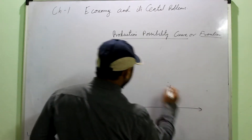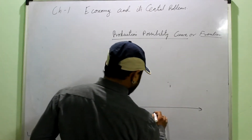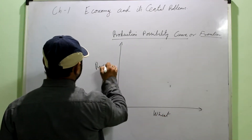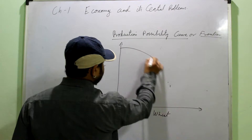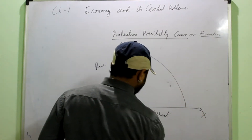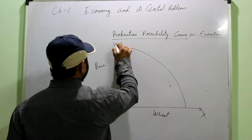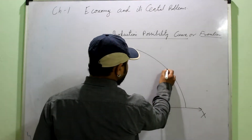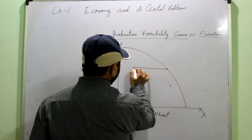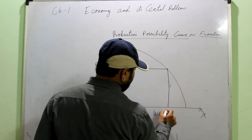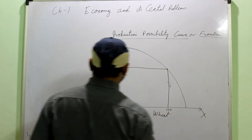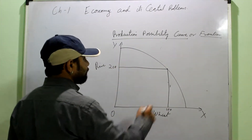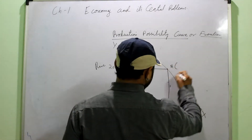Now we move on to the diagrammatic representation. Suppose an economy is producing two goods — say wheat and rice. The X-axis shows units of wheat produced and the Y-axis shows units of rice produced. Suppose my economy is operating at a particular point A, using 100 units of wheat and 200 units of rice. This is the first combination.